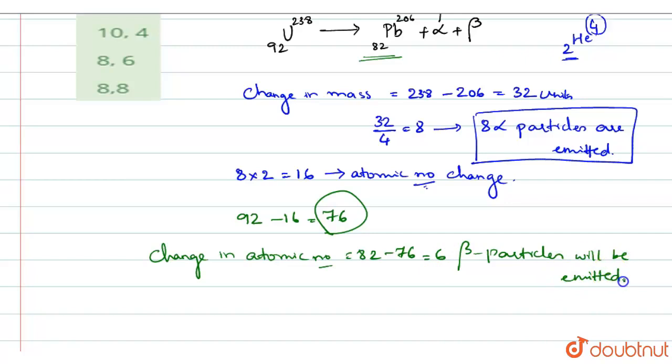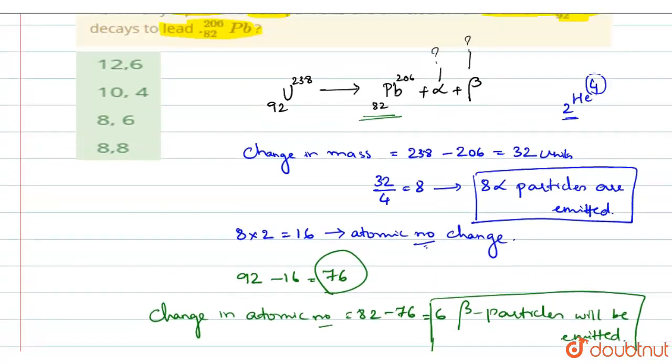Beta particles means -1, right? So it would compensate. So 6 beta particles will be emitted and 8 alpha particles will be emitted. 8 alpha, 6 beta. So 8 alpha and 6 beta, option C will be the right answer.